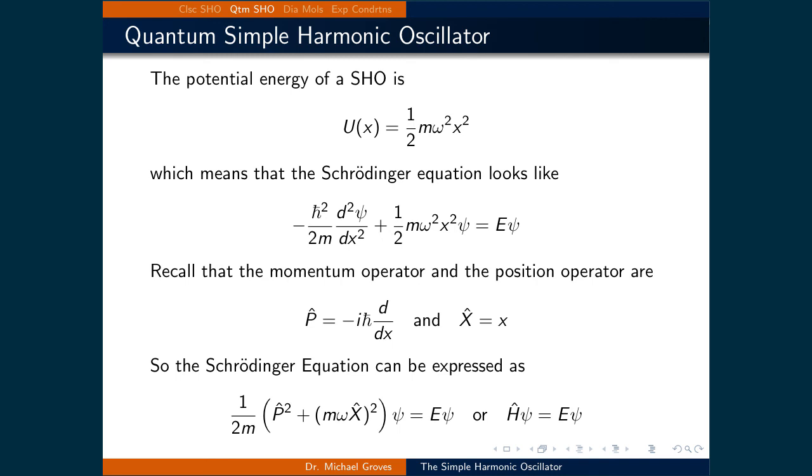First we will rewrite the Schrödinger equation in terms of the momentum operator and the position operator. This means that the Hamiltonian can be expressed as 1/2m(P̂² + (mωX̂)²)ψ = Eψ, which of course can be expressed equally as the Hamiltonian times ψ which gives the energy times ψ.